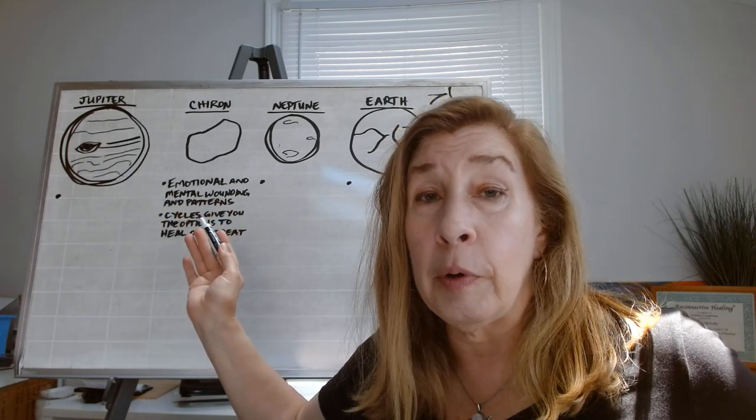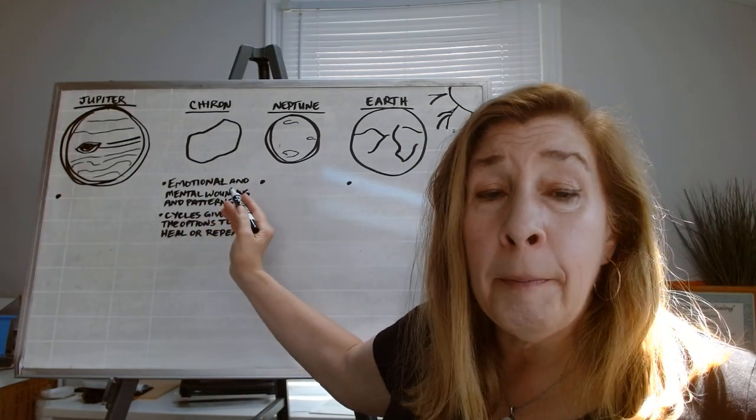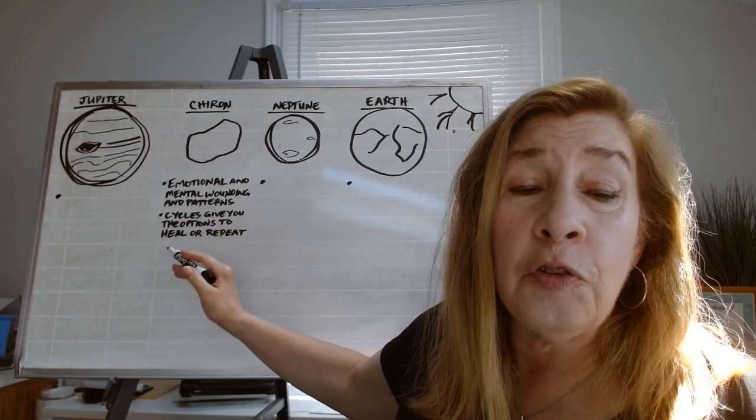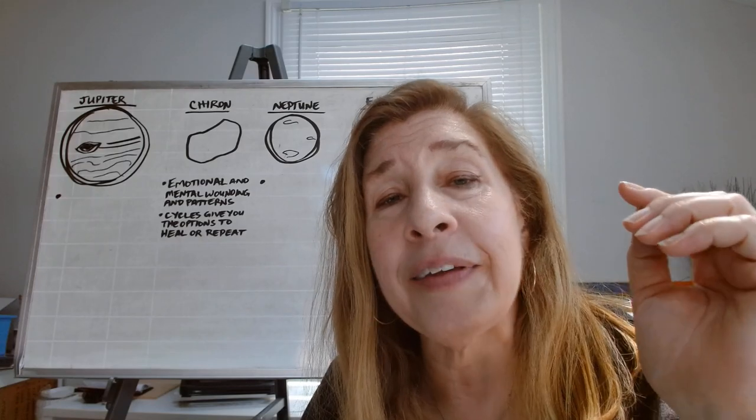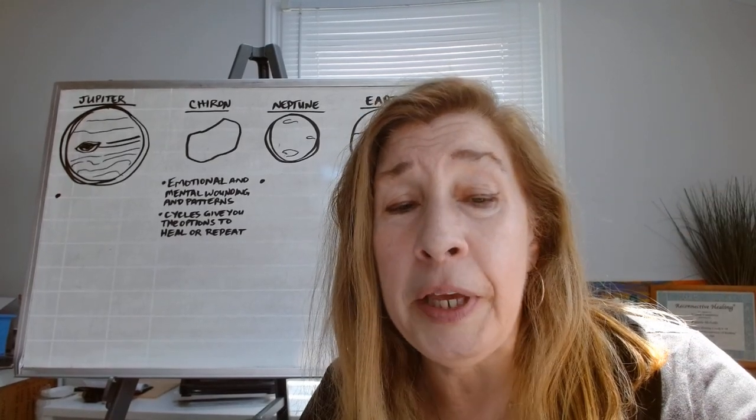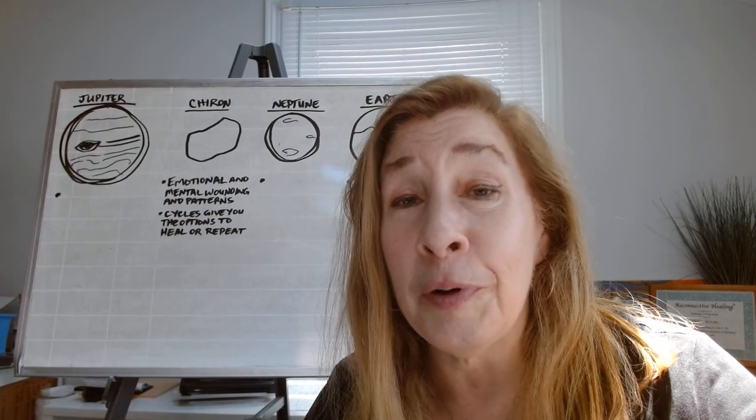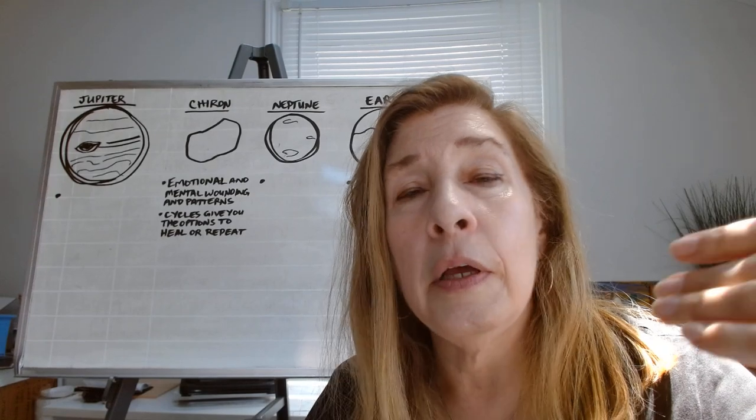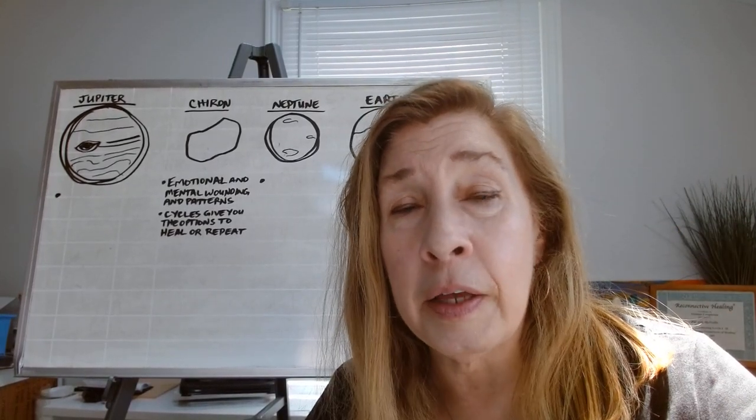It's some of the things that I outlined in my previous video: low appetite, like you're required to essentially be a vegetable because some part of you is up for healing. What are some of these things that you're healing? Patterns, wounds, traumas. These cycles give you the options to heal or repeat, and that is super important.